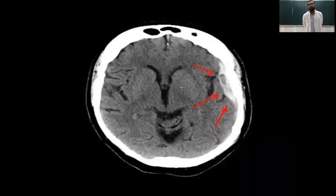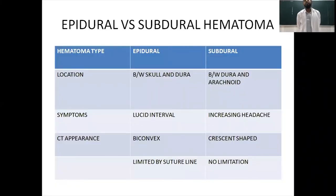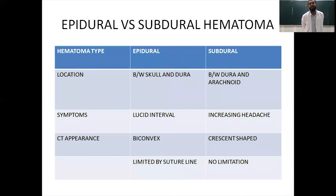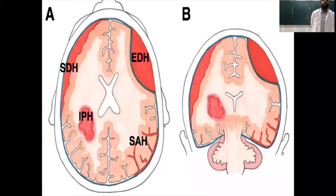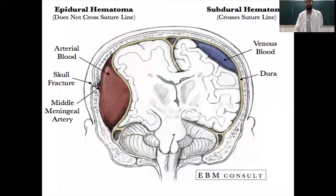Comparing epidural and subdural hematoma: epidural is between the skull and the dura, whereas subdural is between the dura and arachnoid. Epidural classically has a lucid interval, while subdural presents with increasing headache. On CT, epidural appears biconvex whereas subdural is crescent-shaped. Epidural is limited by suture lines whereas subdural is not.